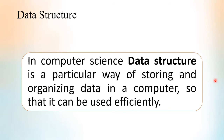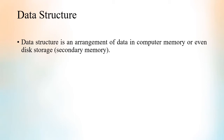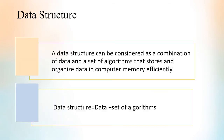Now let us discuss about data structure. In computer science, a data structure is a particular way of storing and organizing data so that it can be used efficiently. It is an arrangement of data in computer memory or even in disk storage. A data structure can also be considered as a combination of data and a set of algorithms.